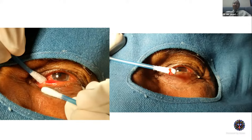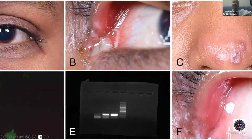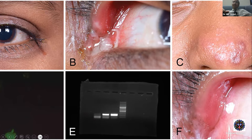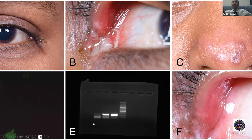Canaliculitis can most often simply be managed by milking out the contents and concretions. However, believing canaliculitis can only be bacterial is not right. This is a typical example of multiviral canaliculitis — this particular case was a combination of herpes simplex and cytomegalovirus canaliculitis, with giveaway signs including nasal involvement. With acyclovir and topical antivirals, we were able to salvage this canaliculitis.